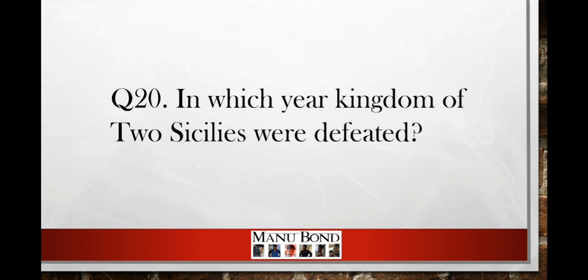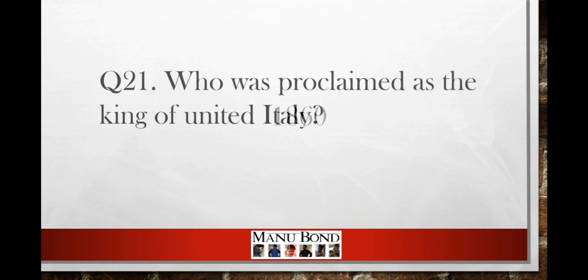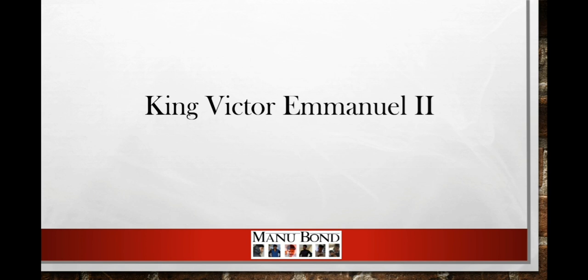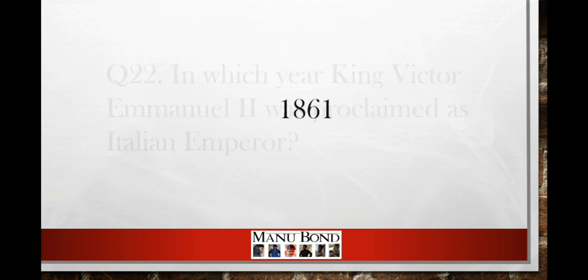Question number 20: Who was proclaimed as the King of United Italy? Answer: King Victor Emmanuel II. Question number 22: In which year was King Victor Emmanuel II proclaimed as Italian emperor? Answer: 1861.